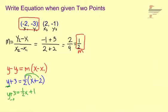Last step, subtract 3 from both sides. And we have y equals 1 half x minus 2. So there's one of our answers. That is slope-intercept form.